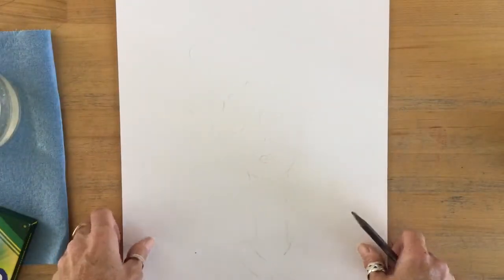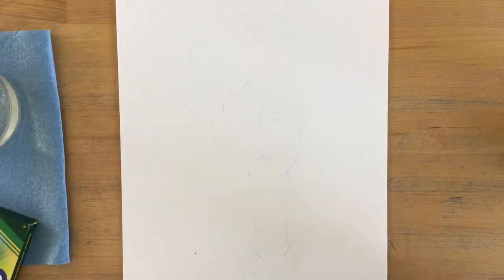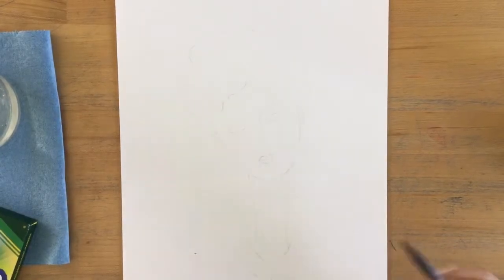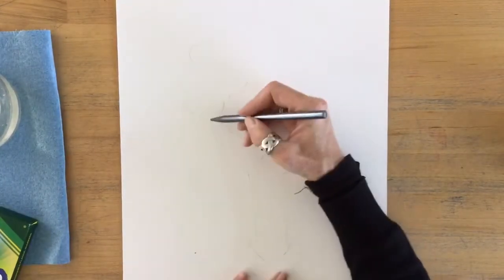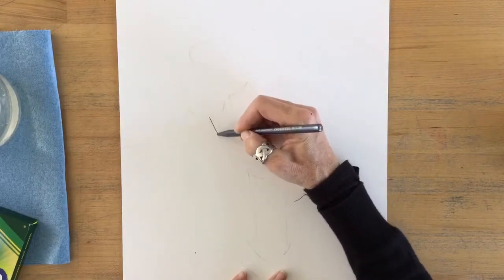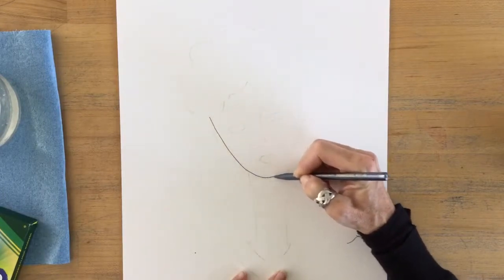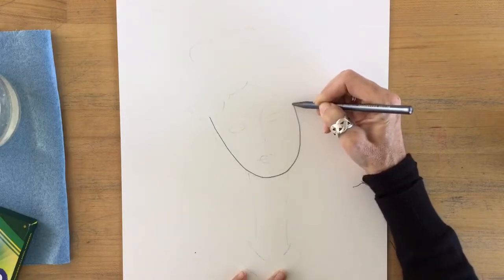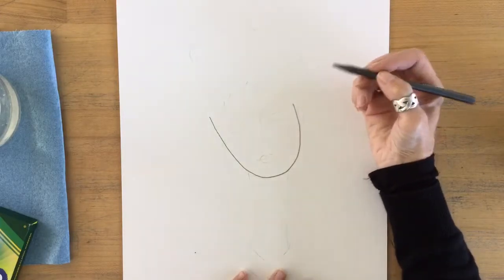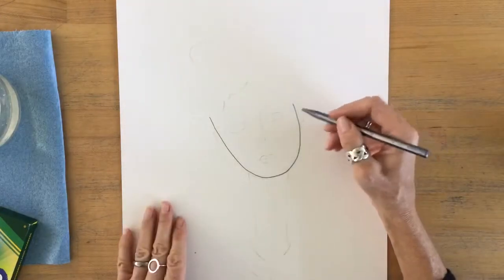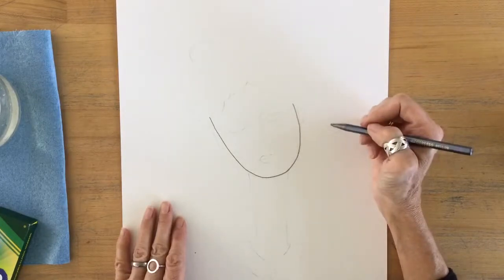So we're going to start by drawing our face. He starts with a U shape to give the outline of a face. Now I'm leaning really hard so you can see it, you're not going to do that.